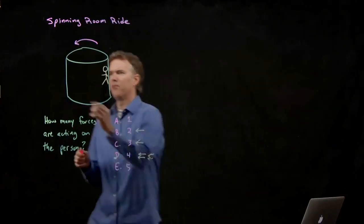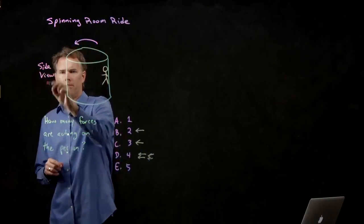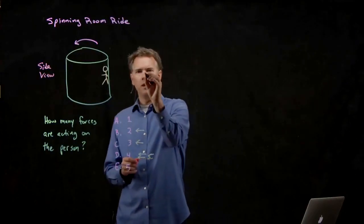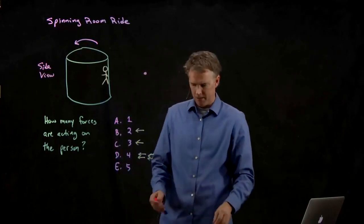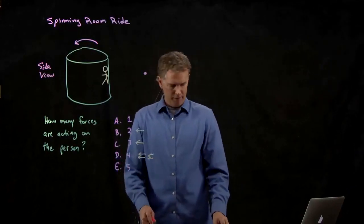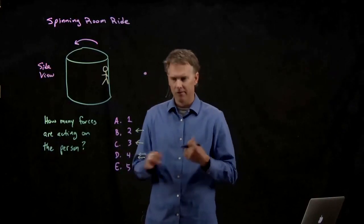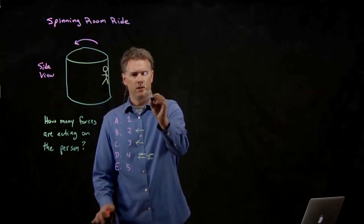This is of course the side view of this spinning room. So if I put the free body diagram right here, that person becomes a dot. What are the forces that are acting on the person? What's the first one we always draw? Gravity. Which way is gravity? Down.